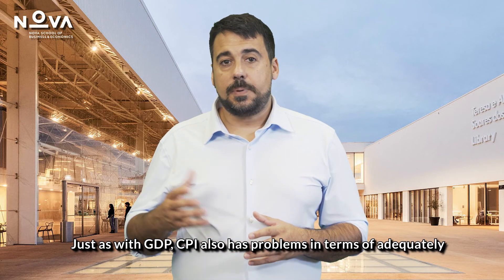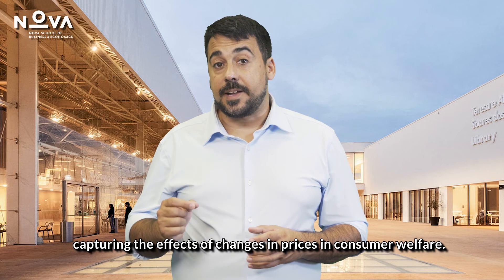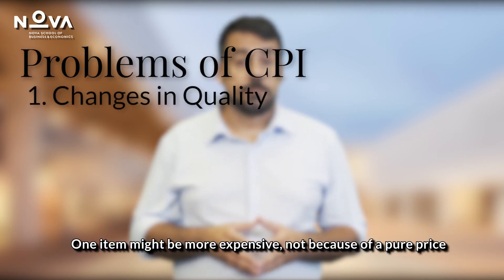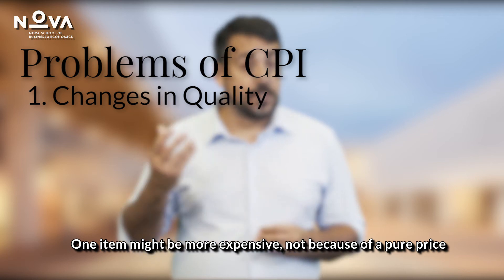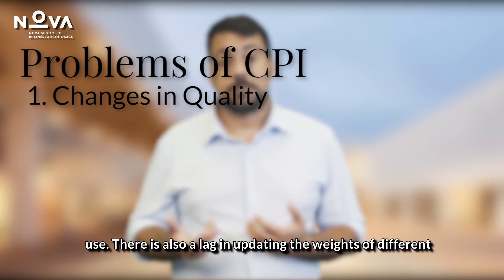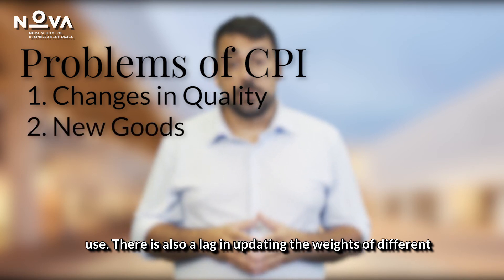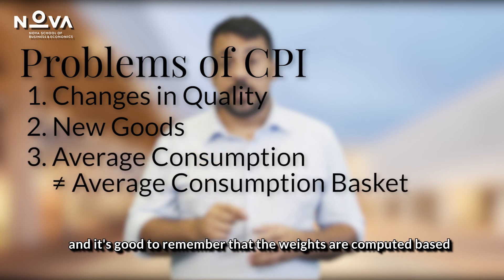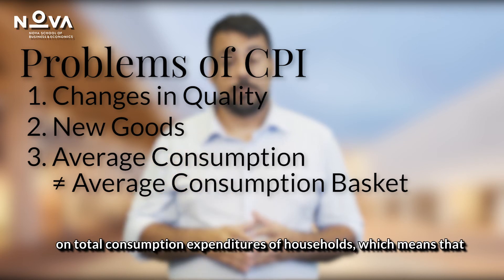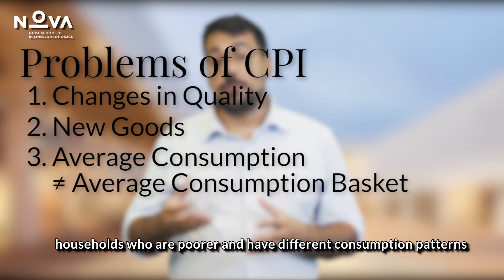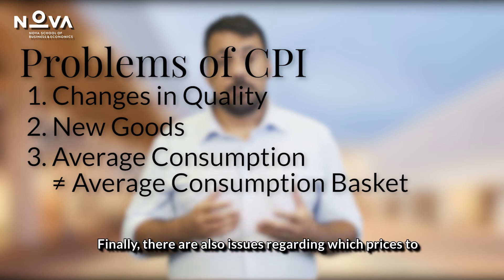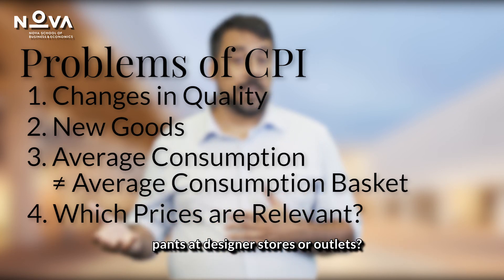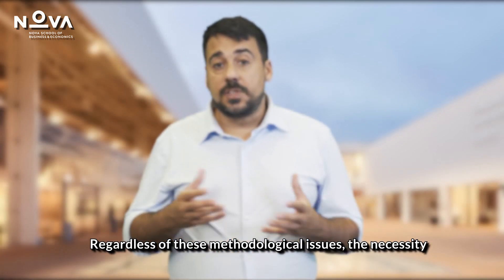Just as with GDP, CPI also has problems in adequately capturing the effect of changes in prices on consumer welfare. It doesn't take into account changes in the quality of goods — one item might be more expensive not because of a pure price increase, but because the item is better and provides more use. There is also a lag in updating the weights of different goods to reflect changes in consumption patterns over time. The weights are computed based on total consumption expenditures of households, which means poorer households with different consumption patterns are underrepresented. Finally, there are also issues regarding which prices to consider — should we look at the cost of the same pair of pants at designer stores or outlets?